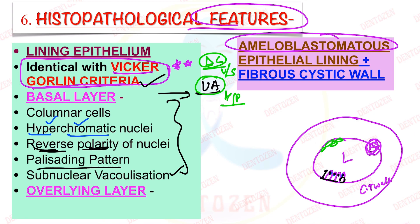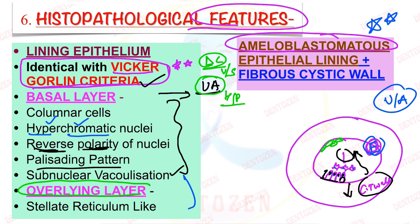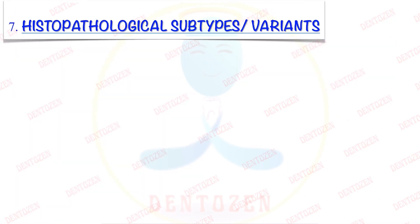If we look at the cells in the overlying layer — above the basal layer — they are made up of loosely placed cells which look similar to stellate reticulum-like cells. In Unicystic Ameloblastoma, we see a cyst-like structure, but the epithelial lining is ameloblastomatous. Now this epithelial lining can proliferate — cells divide and can grow inside the lumen or into the connective tissue wall. Based on where the proliferation occurs, we give three histopathological subtypes or variants.